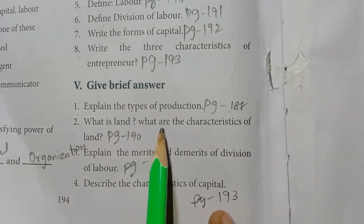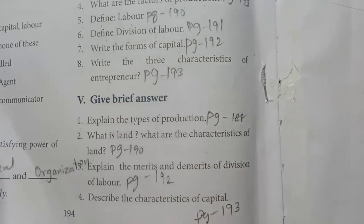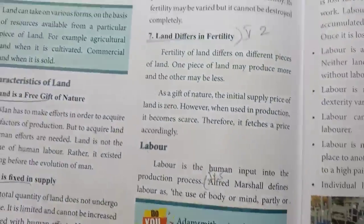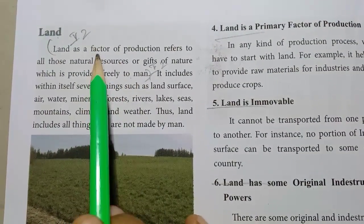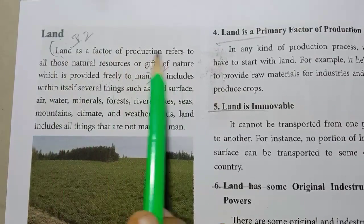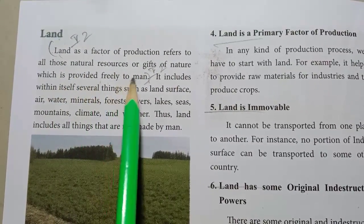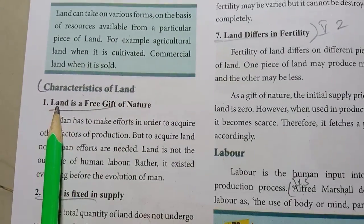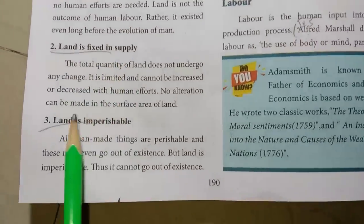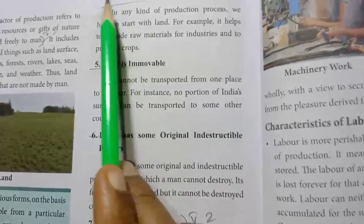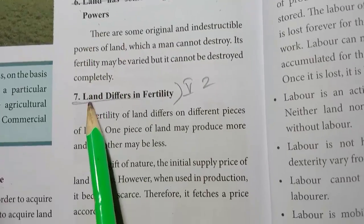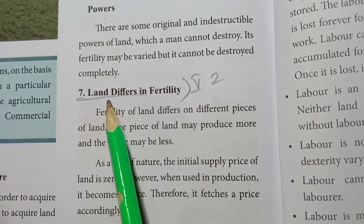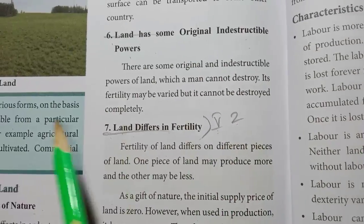Second one: What is Land? What are the Characteristics of Land? Page No. 190. Land as a factor of production refers to all those natural resources or gifts of nature which are provided freely to man. Characteristics of Land: Land is a free gift of nature; Land is fixed in supply; Land is imperishable; Land is a primary factor of production; Land is immovable; Land has some original indestructible powers; Land differs in fertility — write these seven points.